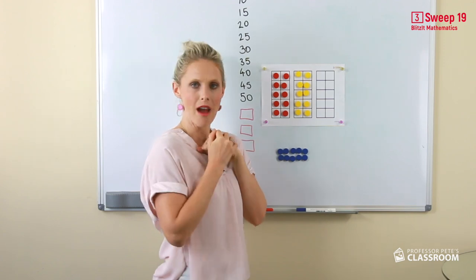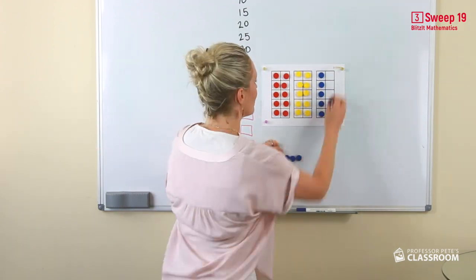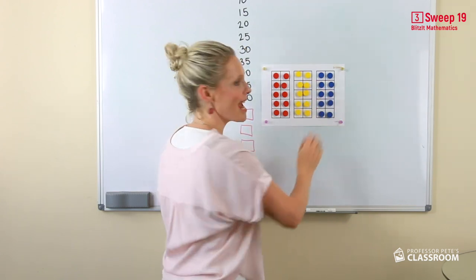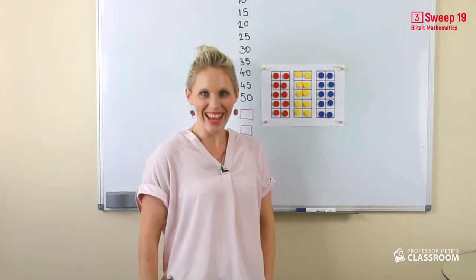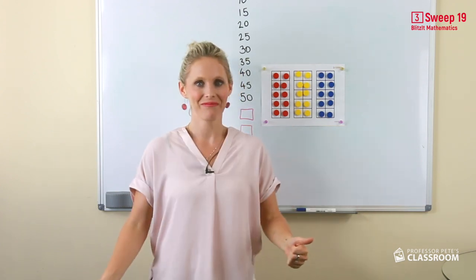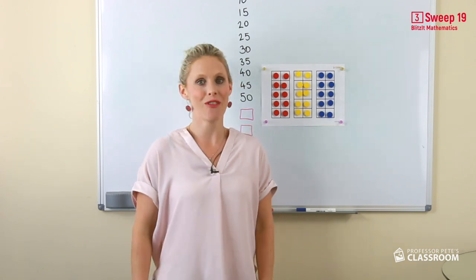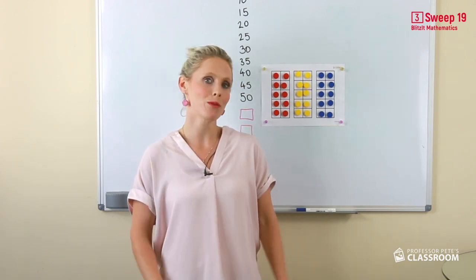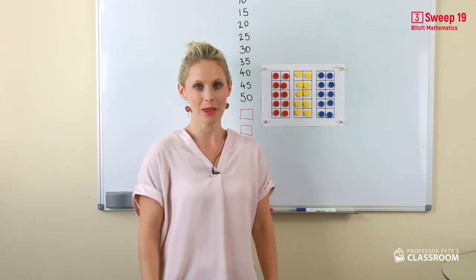Look at that — it's four groups of five, but there's also two groups of ten. Five groups of five is twenty-five, and six groups of five is thirty. Now you have to keep practicing your five times number facts because the more you practice, the quicker you'll be able to learn them.